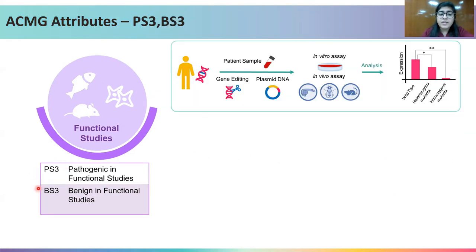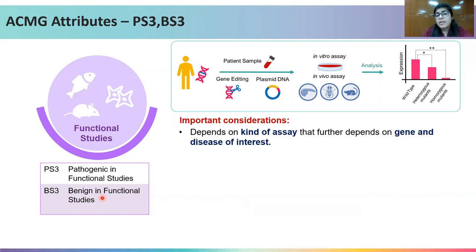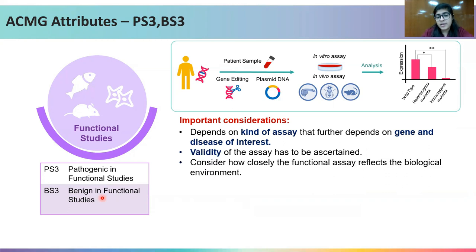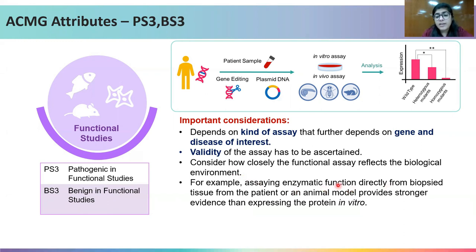In the case of functional studies, PS3 is given when a variant is proven to be pathogenic by a functional assay, and BS3 is given when a variant is proven as benign by a functional assay. Important considerations include: the assay depends on the gene and disease of interest — for a gene coding for an enzyme, the best assay would be to check enzyme activity. The validity of the assay also has to be ascertained — how closely the functional assay reflects the biological environment. For example, assaying enzymatic function directly from biopsy tissue or an animal model provides stronger evidence than expressing the protein in vitro.